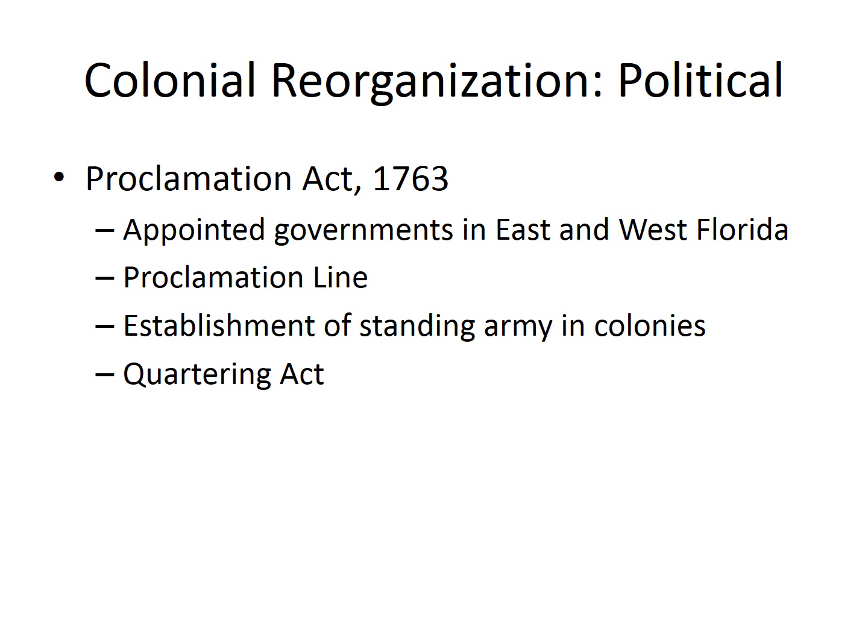Antecedent to the economic reorganization, there was a political reorganization as well — England attempting to exert greater control over the colonies on a political basis. Economics is the control over resources; politics is the control over behavior. After the Seven Years War, England gained control over east and west Florida, breaking it into two districts. Rather than having assemblies and governors elected by the people, the British Crown simply appointed governors and established them essentially as military districts. The most egregious actions, however, are the next three: first was the Proclamation Line.